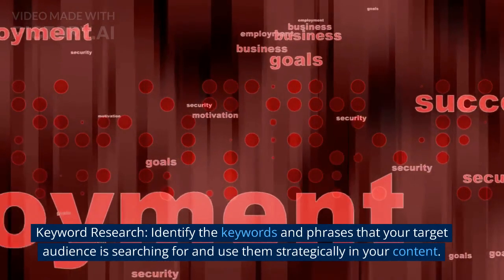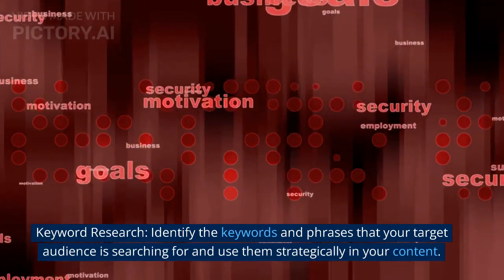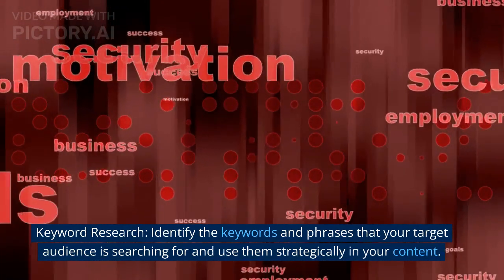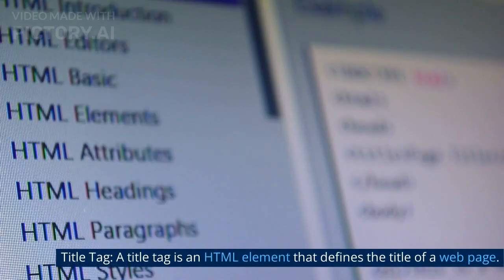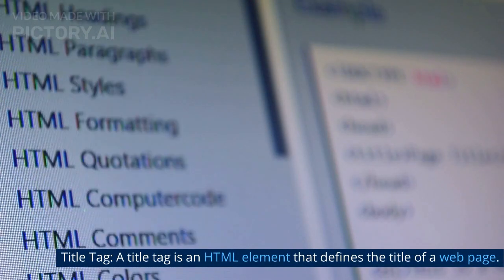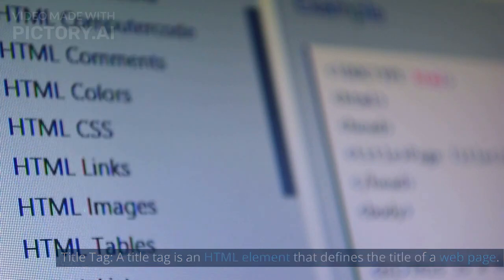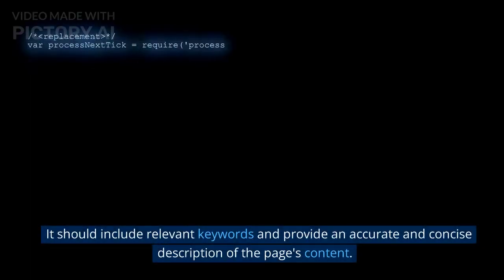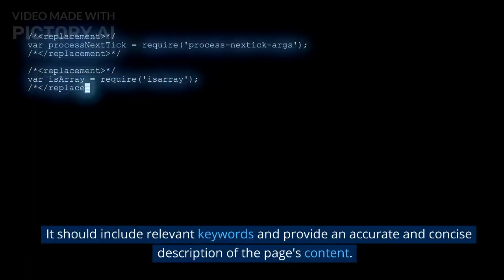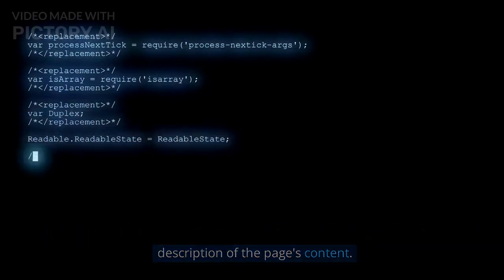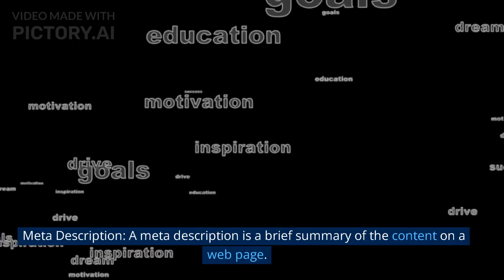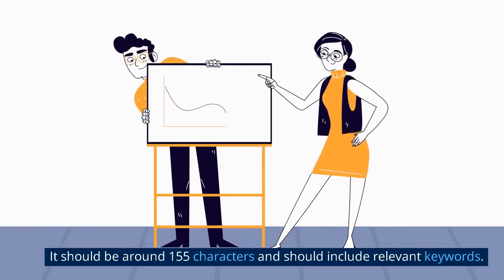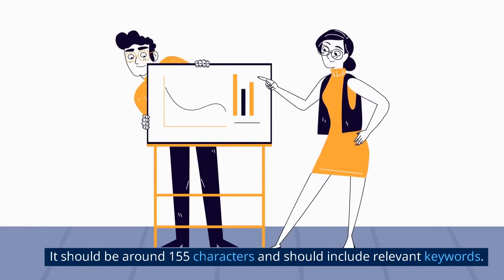Keyword research: Identify the keywords and phrases that your target audience is searching for and use them strategically in your content. Title tag: A title tag is an HTML element that defines the title of a web page; it should include relevant keywords and provide an accurate and concise description of the page's content. Meta description: A brief summary of the content on a web page, around 155 characters, including relevant keywords.